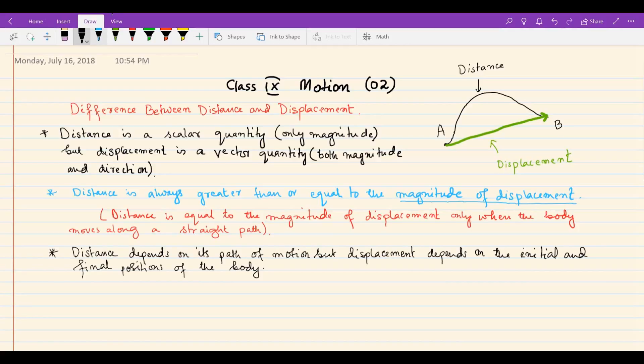Distance depends on its path of motion, but displacement depends on the initial and final positions of the body. The body can take any path, and distance will change accordingly, but displacement only depends on the initial and final points.